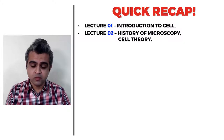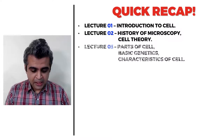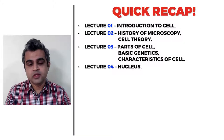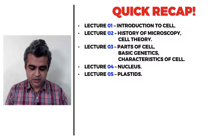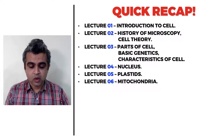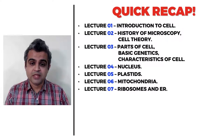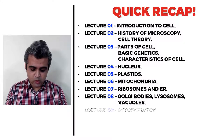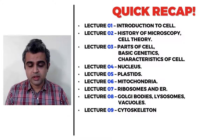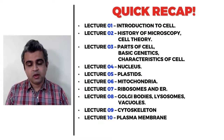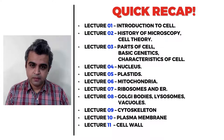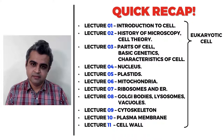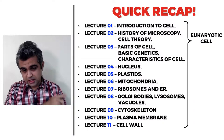In lecture 1 we saw an introduction to the cell; lecture 2 covered the history of microscopy and cell theory; lecture 3 covered parts of cells, basics of genetics, and characteristics of a cell; lecture 4 covered the nucleus; lecture 5 covered plastids; lecture 6 covered mitochondria; lecture 7 covered ribosomes and endoplasmic reticulum; lecture 8 covered Golgi bodies, lysosomes, and vacuoles; lecture 9 covered the cytoskeleton; lecture 10 covered the plasma membrane; lecture 11 covered the cell wall — all in relation to the eukaryotic cell.